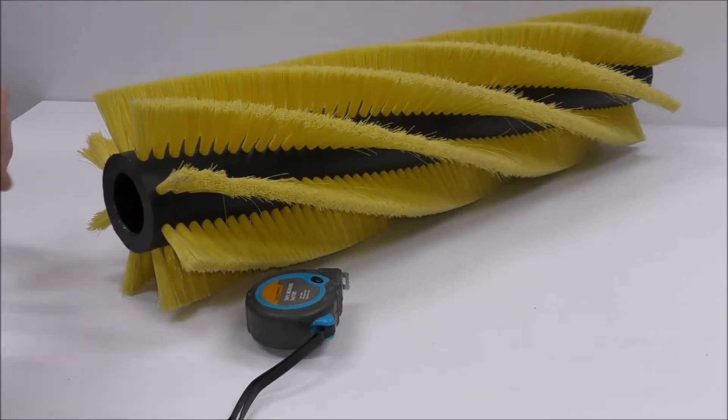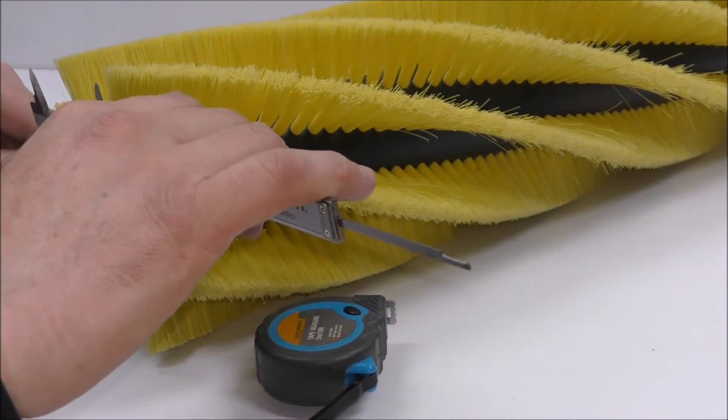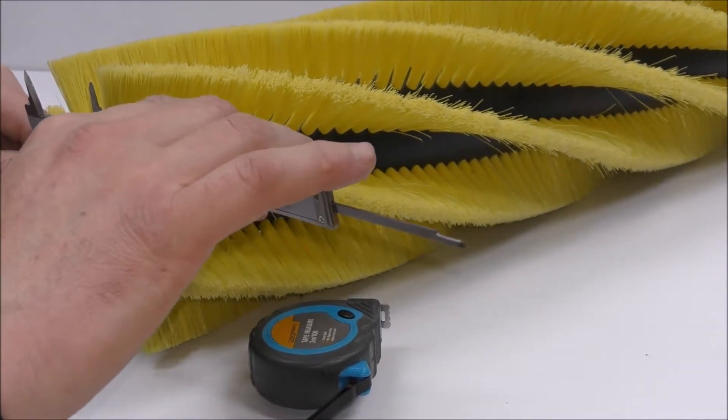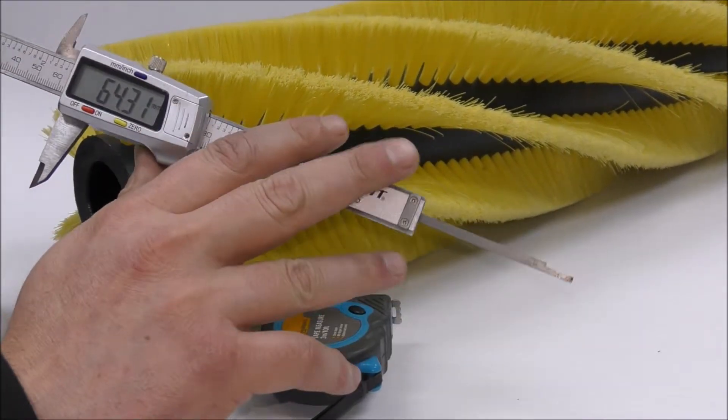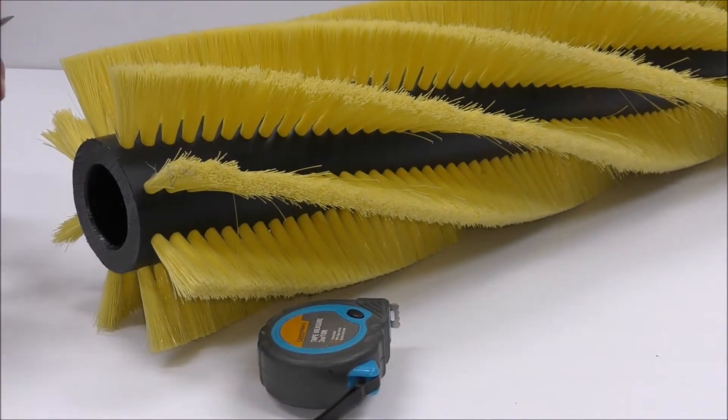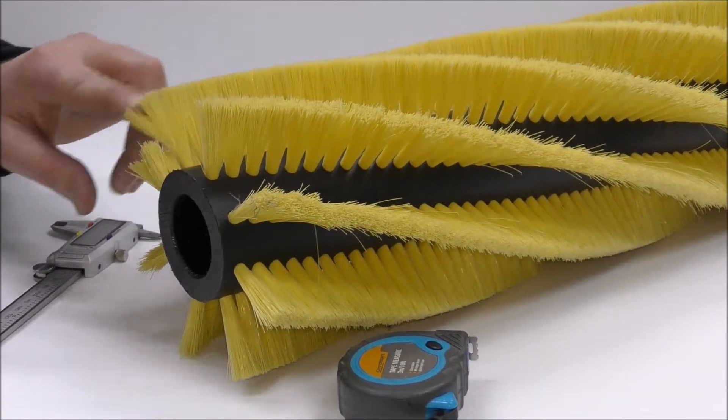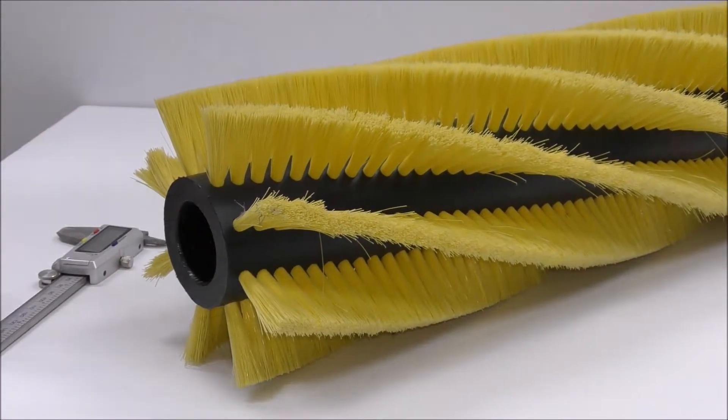The OD of the core, so the outside diameter. ID always referring to inside, OD always referring to outside. 64.31. Again, it's a nominal core. The true measurement is 65 mm. Always round up or down to your closest complete millimeter.